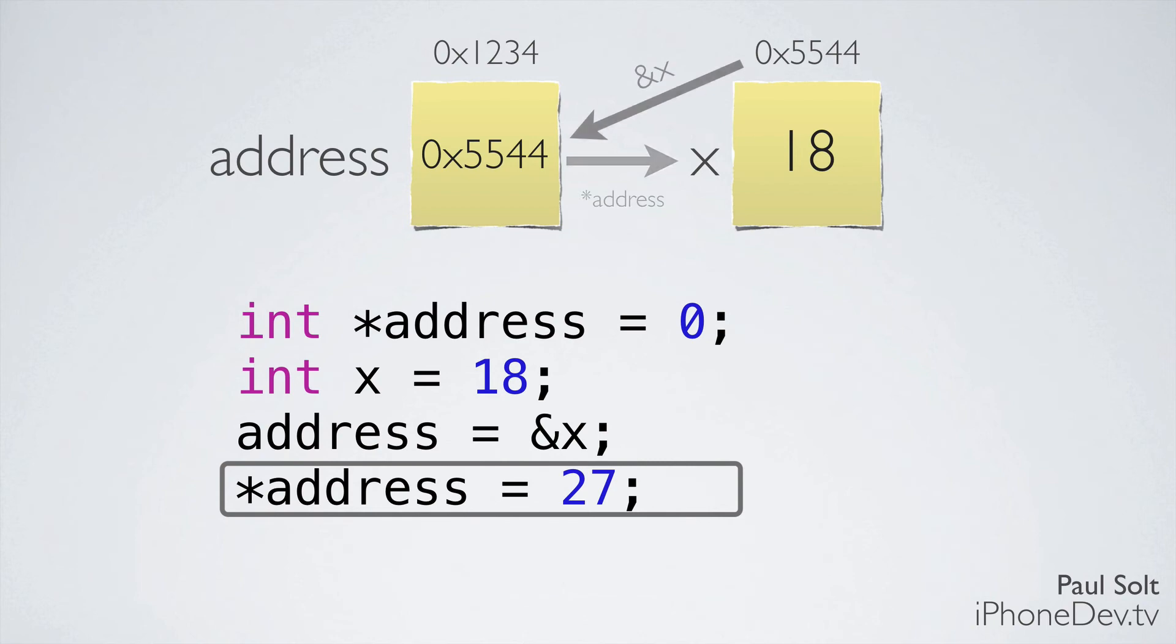The next step is to actually change it. And so this is like bringing the contractor to your house. You give him your address, he drives over, and then he can paint your kitchen. And in this case, we can change the value of x by using the address that we were given on the previous line. And it now becomes 27. So that's it for pointers right now. If you have any questions, just post them in the comments below. We'll create a discussion on Skillshare.